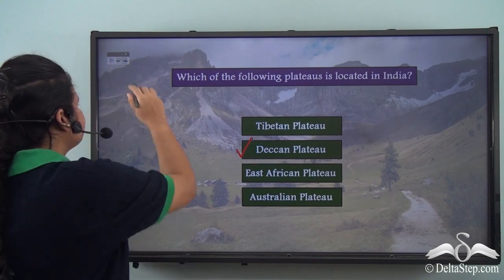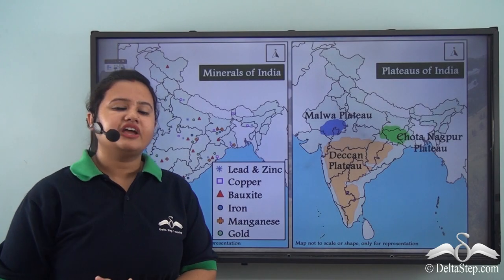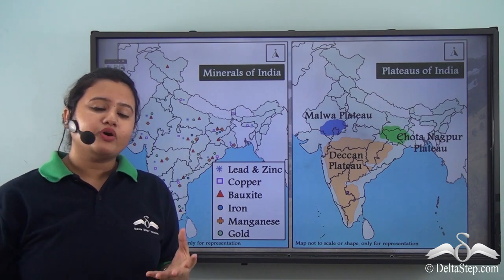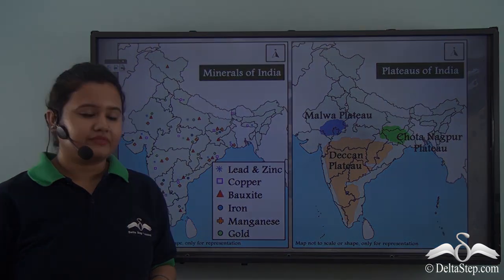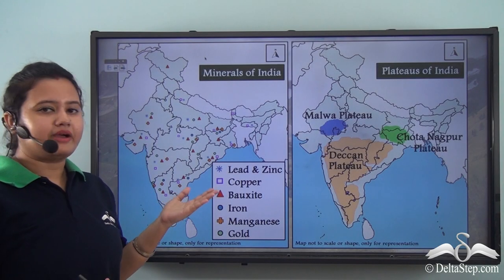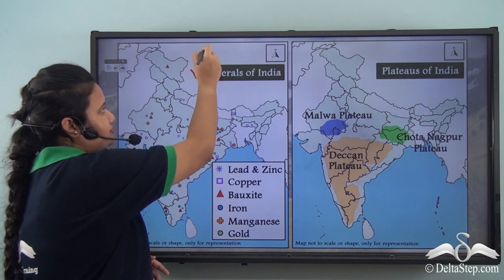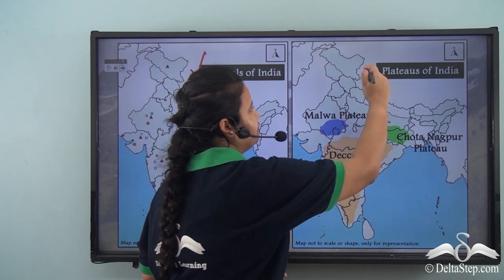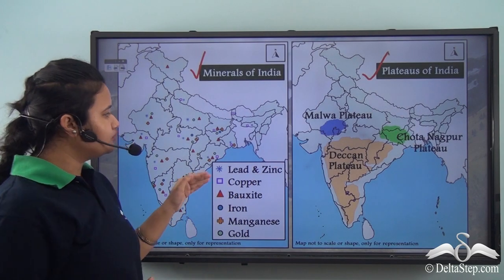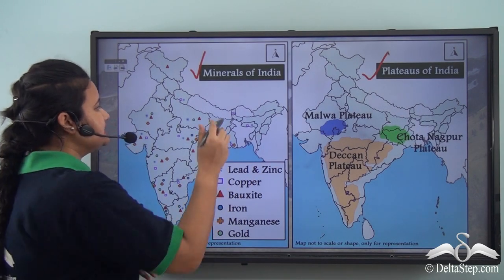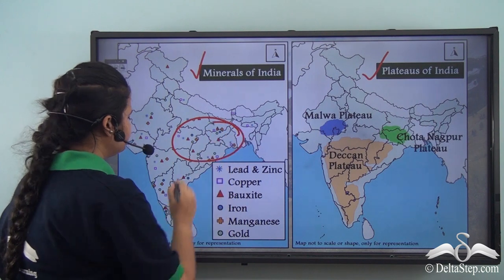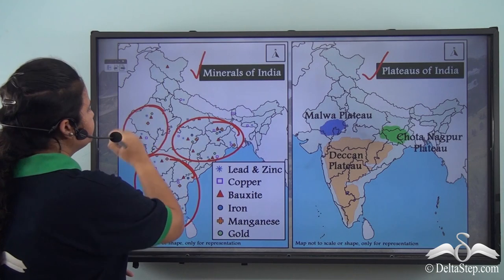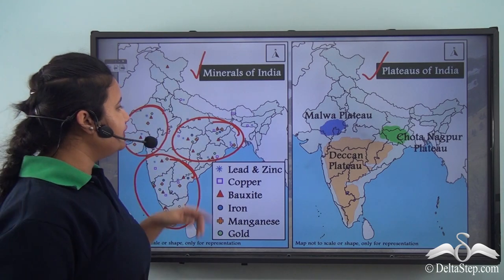Now that we have understood the meaning of plateau, let us discuss the importance of this landform. Here we have two maps — the first shows the minerals found in India and the second shows the plateaus of India. Comparing these two maps, we find mineral-rich zones that coincide with major plateau regions.